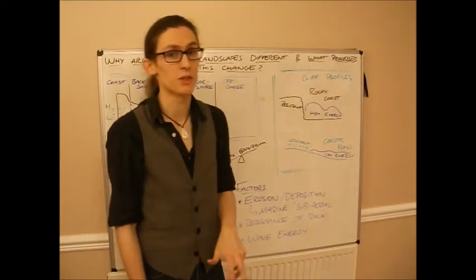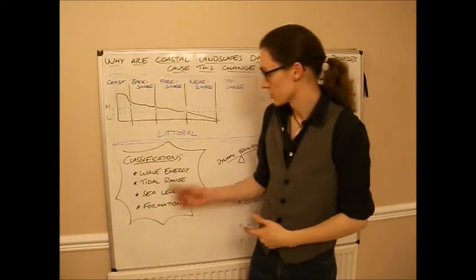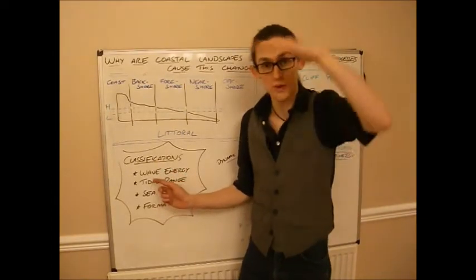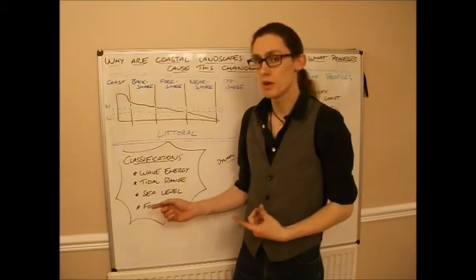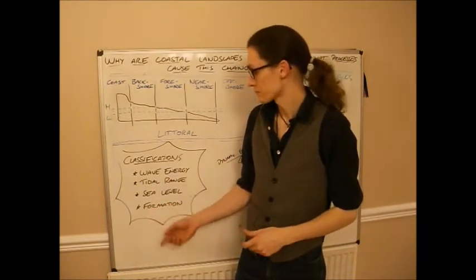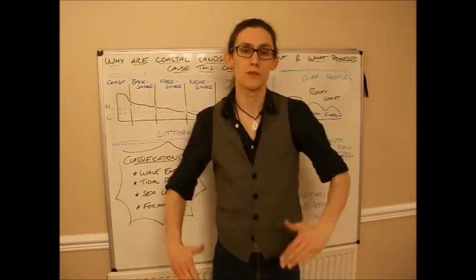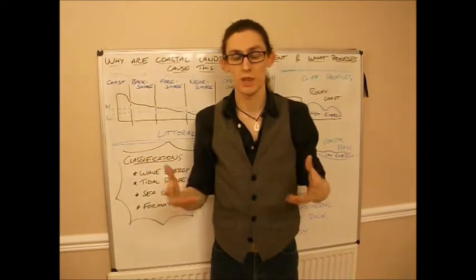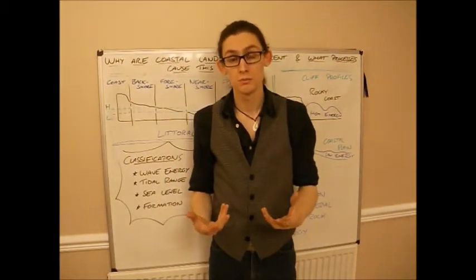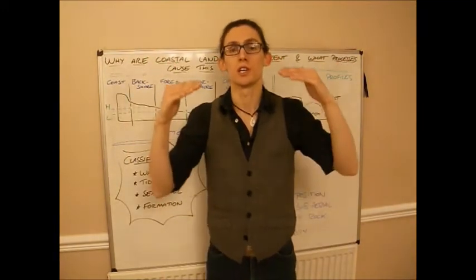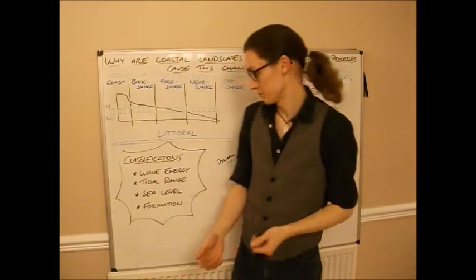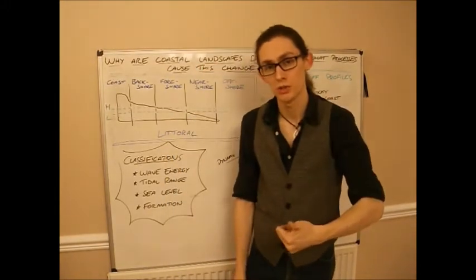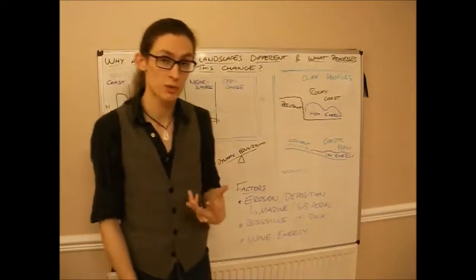Now these are not the only ways that you can classify coasts. As well as wave energy, we can look at tidal range — is it very tidal, like you get in Bristol with a very large tidal range? We can look at sea level — is the sea level rising, so is the land basically sinking into the sea like in Cornwall, or is it emerging, rising up like in particular parts of Scotland? And how has it been formed — is it erosion, deposition, transportation, or a combination?